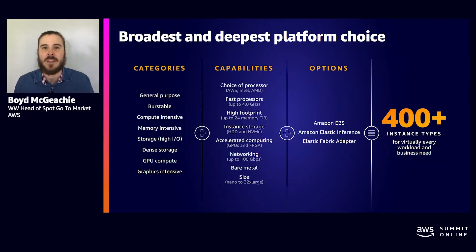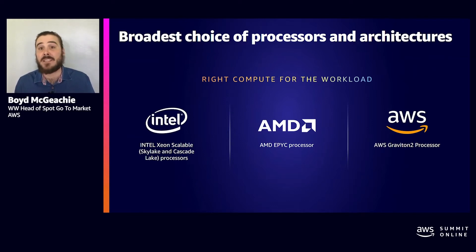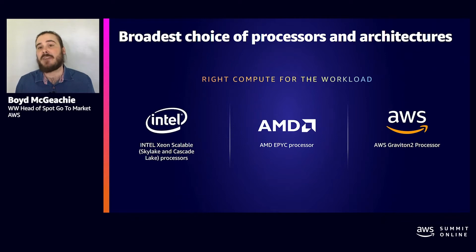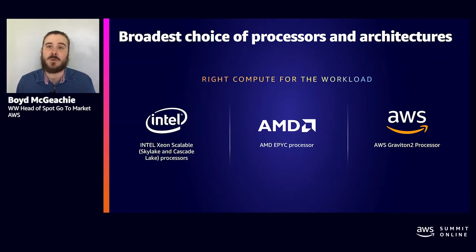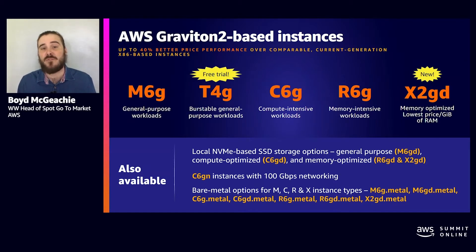We have one of the broadest arrays of processors and architectures available in the world — certainly the broadest in the cloud — whether you want Intel, AMD, or these days ARM architecture. A lot of our EC2 instances have been powered by Intel for some time, with many now running Skylake or Cascade Lake. Over the last few years, we've also seen a dramatic increase in AMD EPYC instances. And certainly one of the most exciting things to talk about is AWS Graviton2, an ARM-based processor built by Amazon to deliver price-performance characteristics that customers were really asking for.